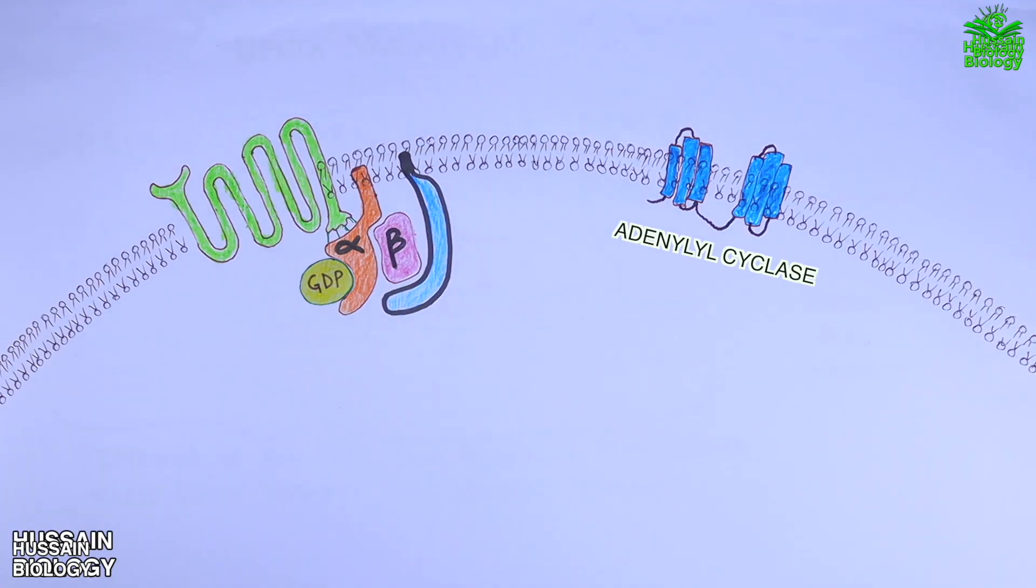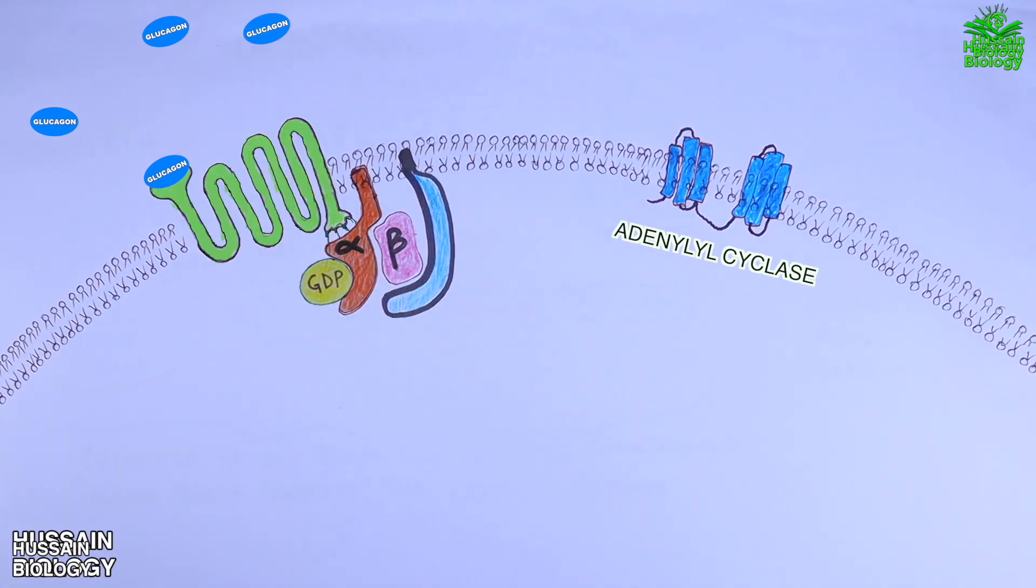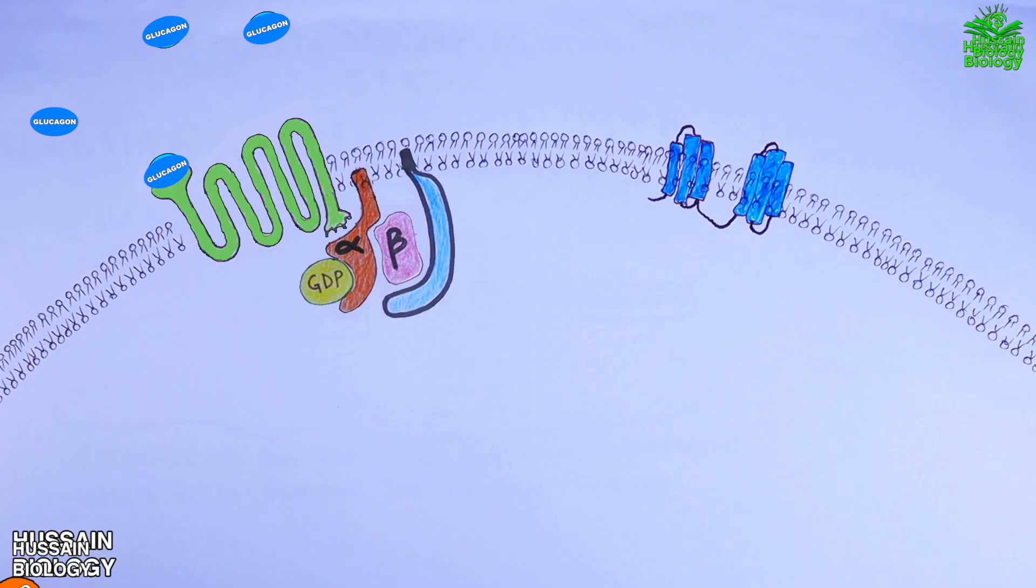And here we can see these glucagon molecules come in and bind with the GPCR receptors and mediate conformational changes within the GPCR receptors. Wherein we can see the activation of G proteins from the intracellular side. The G alpha protein has GDP bound, but upon glucagon binding, the GDP is replaced by GTP molecule as shown in the animation.